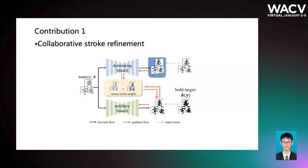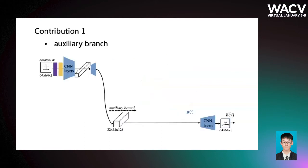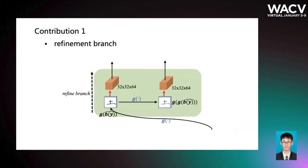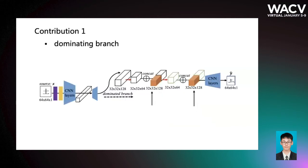In detail, the input image will be encoded by the shared encoder and decoded to a low-resolution feature map, which will be sent to the dominating branch and auxiliary branch respectively. The auxiliary branch is supervised by the bold-version target, generated from the original target by erosion operation. The output of the auxiliary branch is then sent to the refinement branch through max pooling layers as a dilation operation. The refinement branch convolves these results, and the output is concatenated with the intermediate feature map to compensate for the dominating branch. This significantly addresses the stroke missing and broken issue.